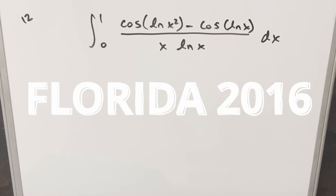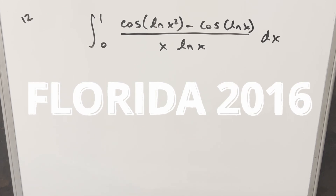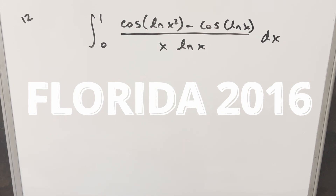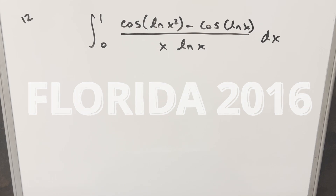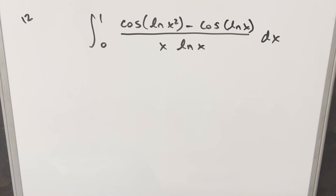Today we have a tricky looking integral. This one's from the Florida integration bee 2016, problem 12. We have the integral from 0 to 1 of cosine of (ln x)² minus cosine of ln x, over x·ln x, dx.